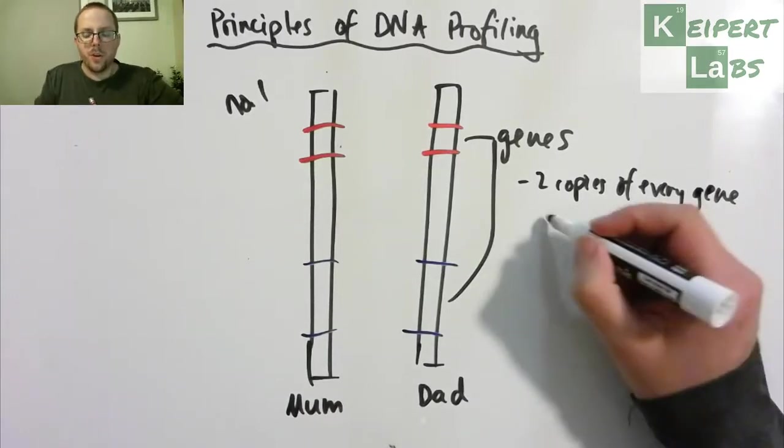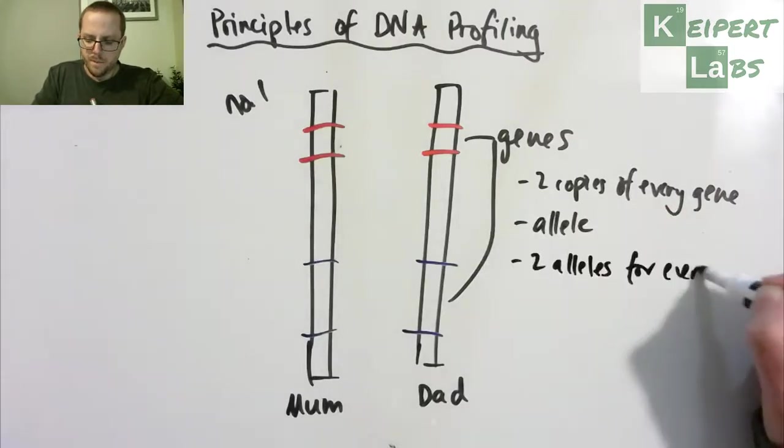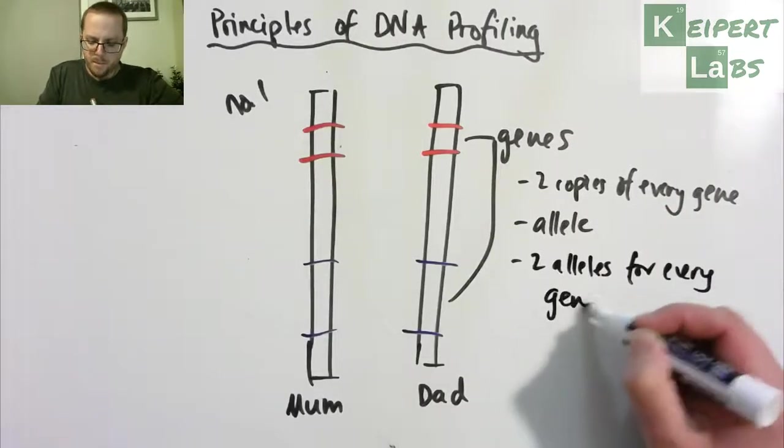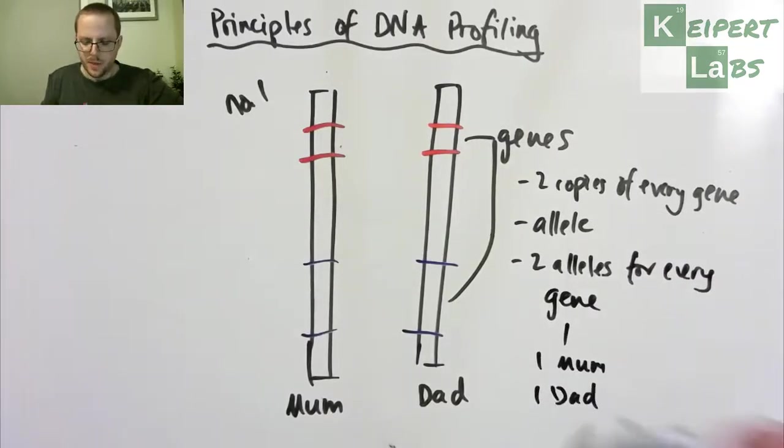The word that we use to describe the copies of genes is allele. So A-L-L-E-L-E. So you've got two alleles for every gene. One from mum and one from dad. So two alleles for every gene.